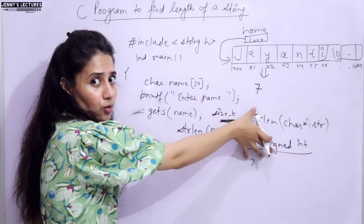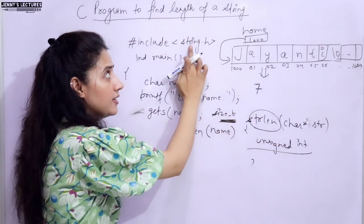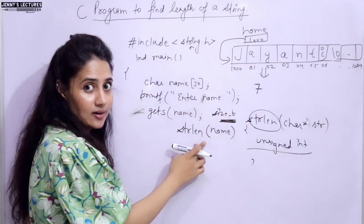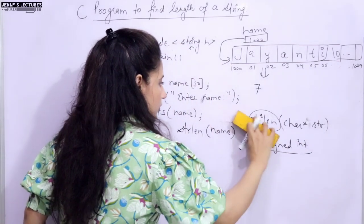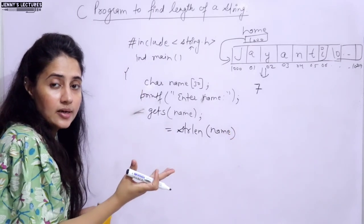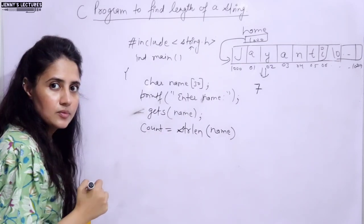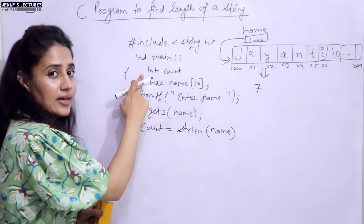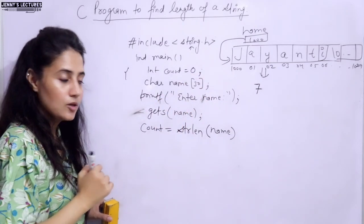This function is already defined in string.h, so we don't have to bother about the code of strlen - the compiler will automatically refer to this header file. We pass the name of the string and it returns an unsigned int value, which we store in an integer variable. I am declaring unsigned int count initialized to 0, and that will hold the string length.